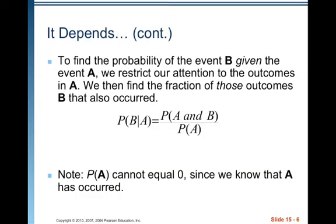To find the probability of event B given event A, we restrict our attention to the outcomes in A. We then find the fraction of those outcomes where B also occurred. So the probability of B given A is equal to the probability of A and B both occurring, divided by the probability of A. Note: the probability of A cannot equal 0, since we know that A has occurred.